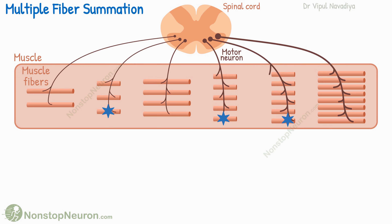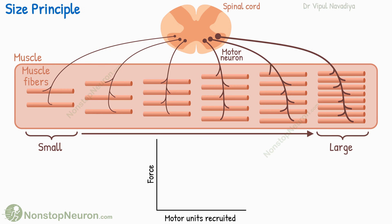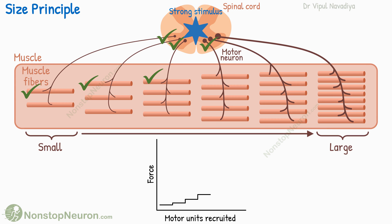There are two interesting things to know regarding multiple fiber summation. One is the size principle. The motor units come in all sizes, from small to large. If less force needs to be generated by the muscle, the brain sends a weak stimulus to the spinal cord. Such weak stimuli can stimulate small neurons only, not the larger ones. So small motor units are activated first. Because of this, initially the force increment occurs in small steps. As the stimulus gets stronger, progressively larger motor neurons are activated. So large motor units are activated at very strong stimuli, and a progressively larger increment in force is seen. This is called the size principle.